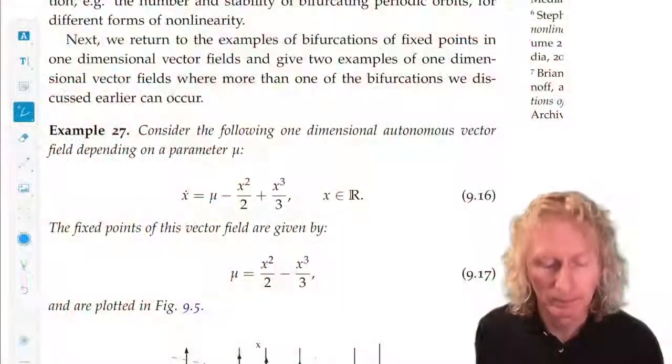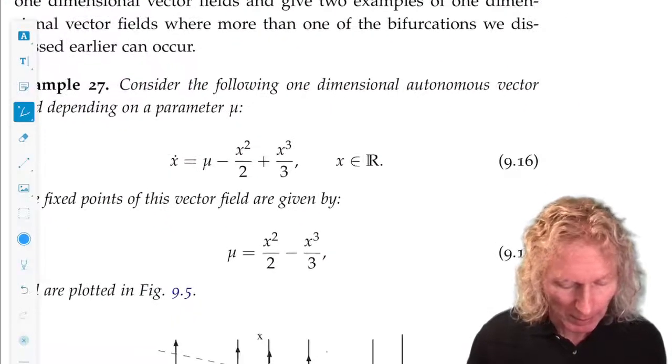Welcome back. I want to finish chapter 9 by considering two examples where multiple types of bifurcations occur in the same parametrized family. So here's what I mean by this.